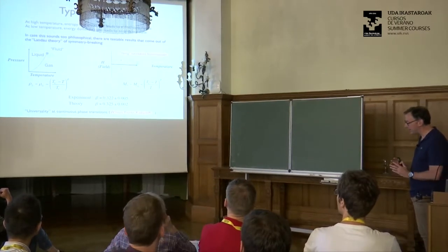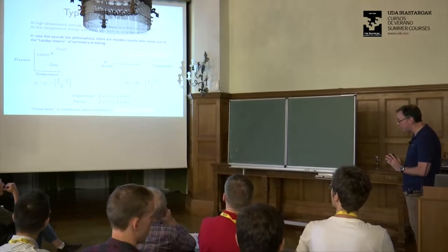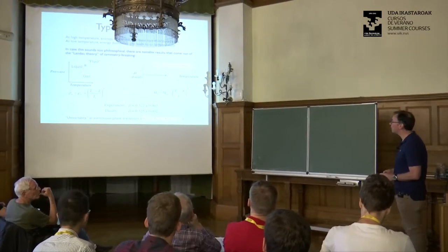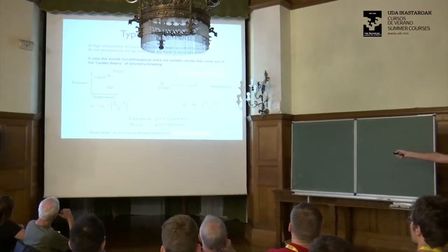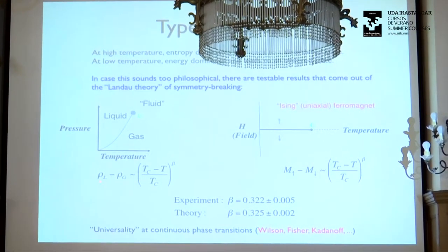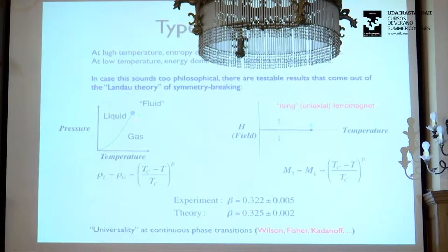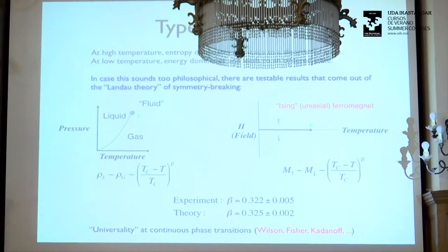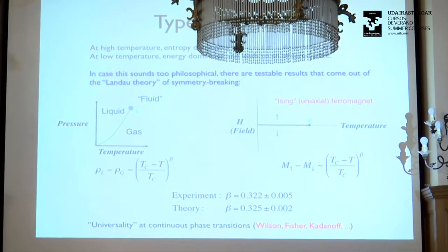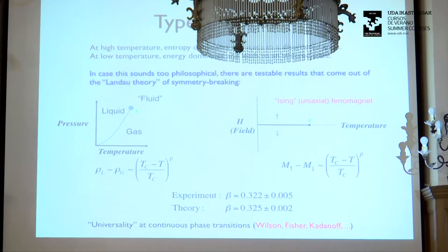What maybe got me into condensed matter physics was the idea of universality in symmetry-breaking phases. Topological phases have another kind of universality which is just as interesting. What I mean by universality: if you go close enough to a second-order phase transition — say where the difference between liquid and gas of water is disappearing — you can measure that difference by the difference in densities, and it vanishes as some power law as you approach the critical point. That power law is about the same for all three-dimensional simple fluids like water.